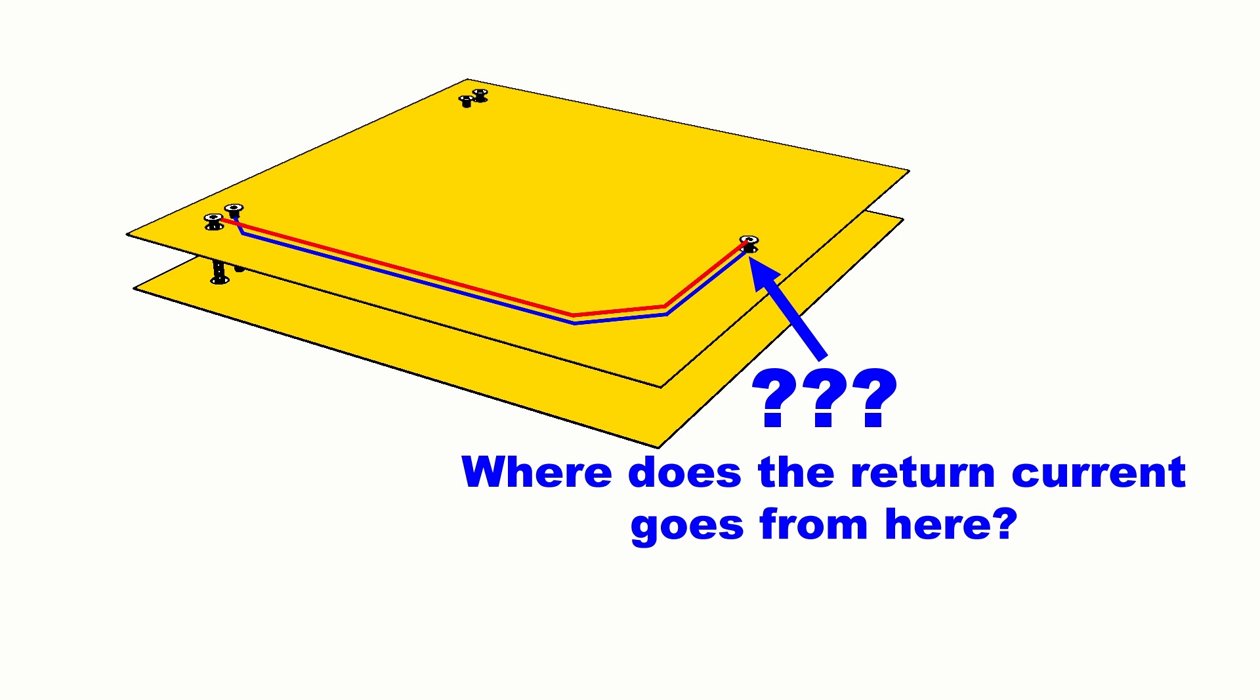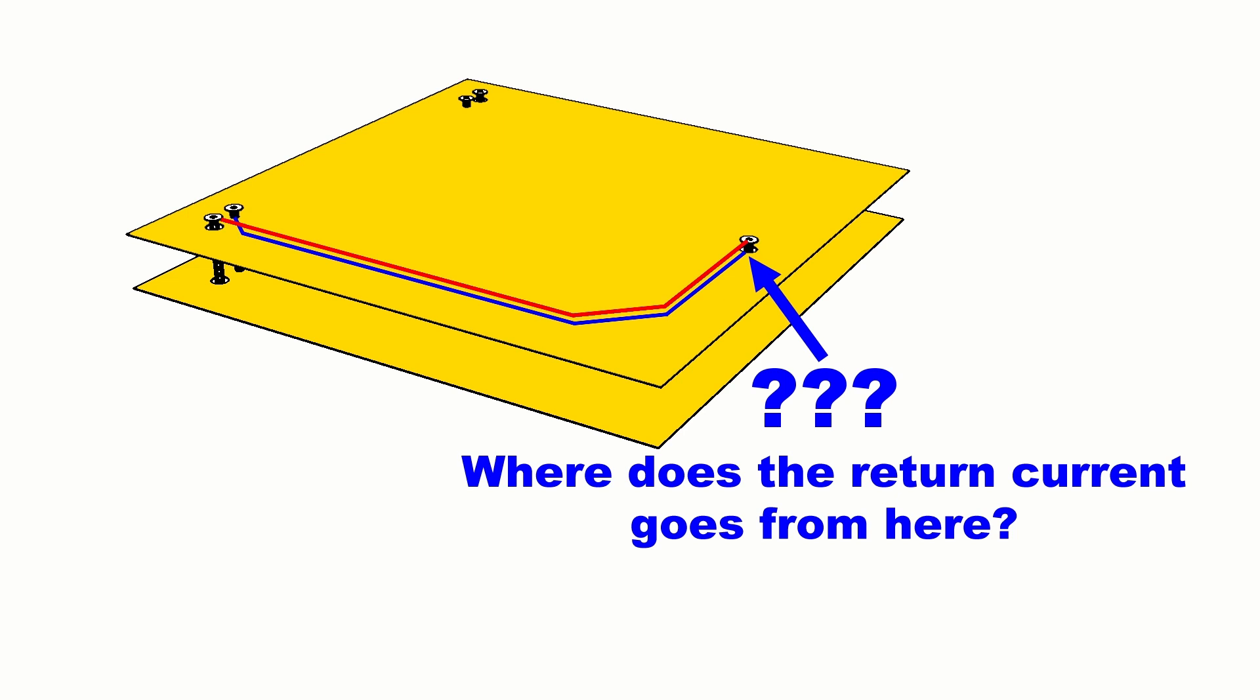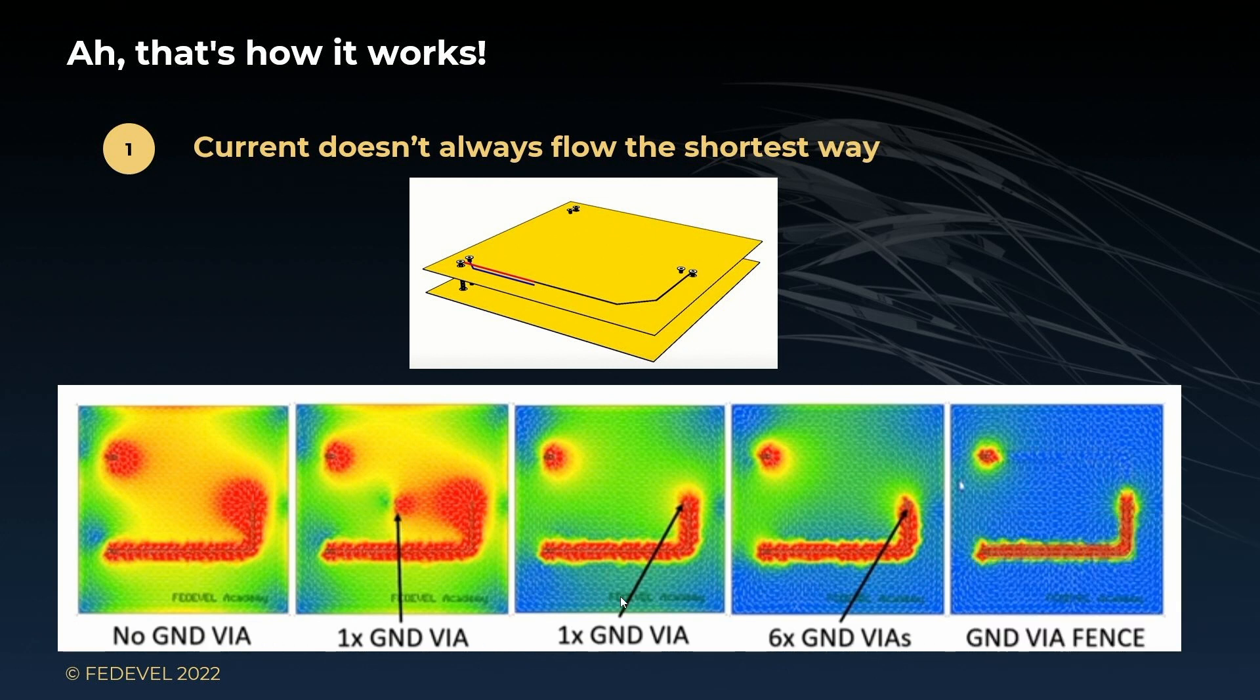This is why it is important to understand return currents. Because you suddenly start thinking about your layout differently. By the way, on these other pictures, you can see what will happen in different situations. For example, if there is no stitching via, you can see the return current will spread all over the whole ground plane. If there is a stitching via, but placed far away from the place where the signal is changing layers, some currents will find a way to go through that via, but there still will be a lot of current flowing around the board. Much better, it is to place the stitching via close to the place where the signal is changing layers. Or even better, it is to place more vias.